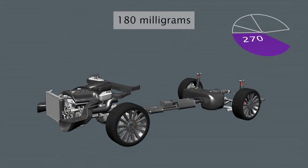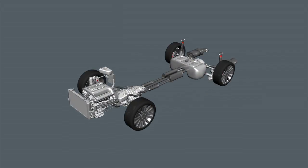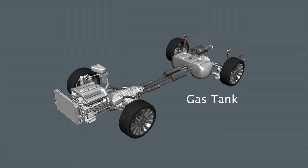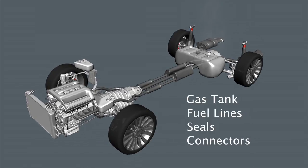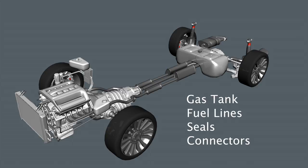With an allotment of 180 milligrams remaining for the fuel system, material selection is crucial. Hydrocarbons will permeate substandard materials. Evaporative emission control is directly related to the type of materials used to make the gas tank, fuel lines and parts that seal and connect these components.